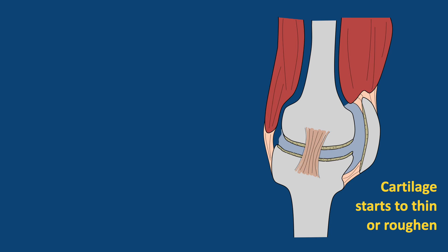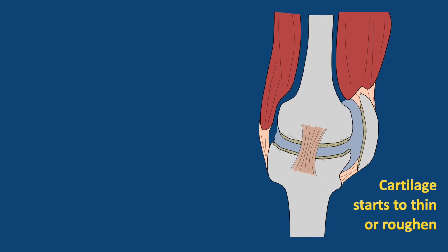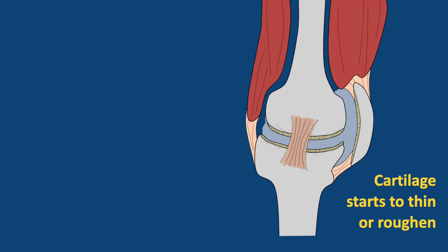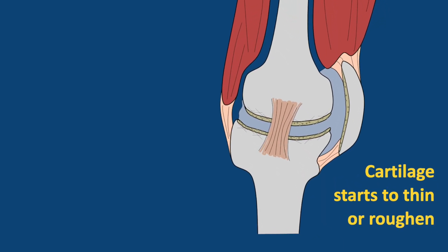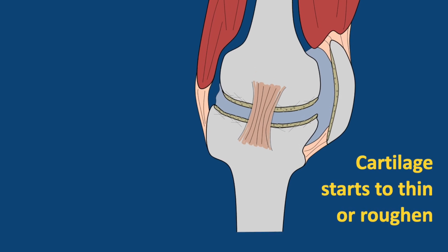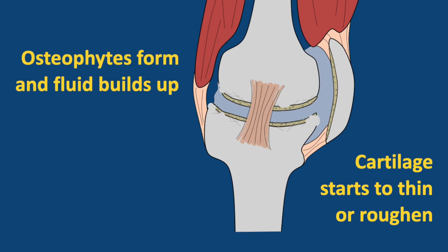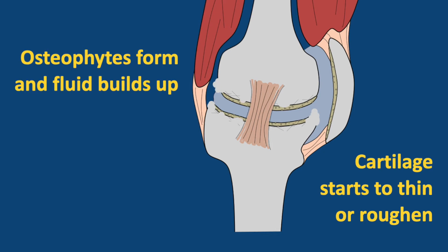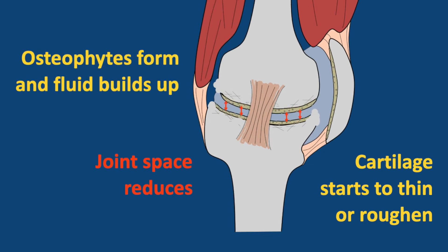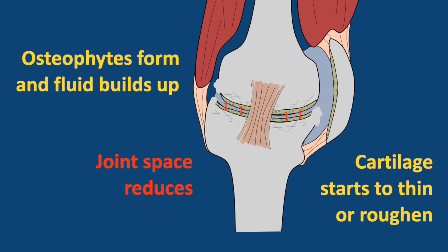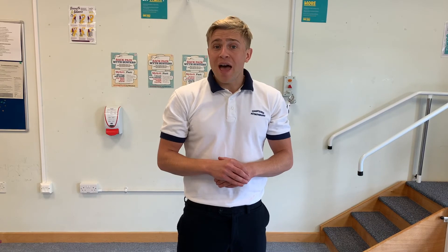When the cartilage in our joints starts to thin, our body puts in place a process to repair it. This happens many times over our lifetime, but as we get older, this process can cause other changes within the joints. New bits of bone known as osteophytes may begin to grow within the joint and fluid can build up inside. This reduces the space within the joint, meaning the joint doesn't move as smoothly as it used to and it might feel stiff and painful. These changes can be seen on x-ray; however, we now know that the same changes can also be seen in people without pain and are therefore considered as normal age-related findings.